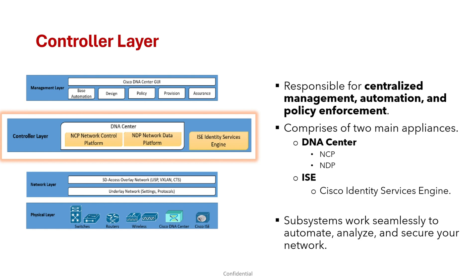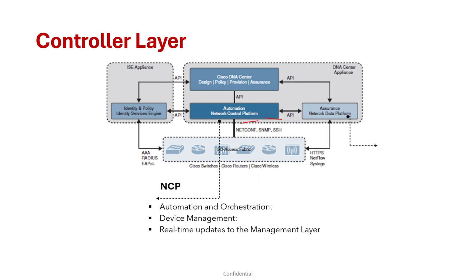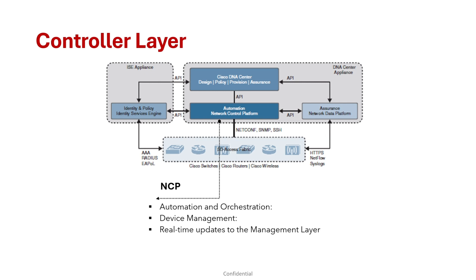Let's look at those subsystems, starting with NCP. This subsystem is embedded in DNA Center and handles automation and orchestration — it automates the configuration of your underlay and fabric networks. It handles device management using protocols like NETCONF, YANG, SNMP, SSH, and Telnet to manage Cisco devices. NCP also provides real-time network automation status and other details to the management layer.